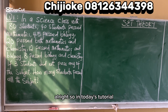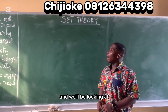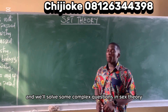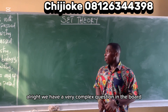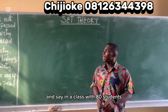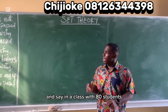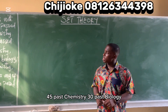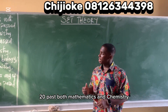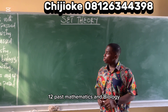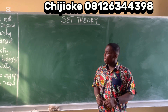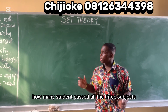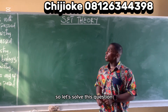In today's tutorial, we're talking about set theory, and we'll be looking at representation of sets using Venn diagrams and solving some complex questions. We have a complex question on the board: in a class with 80 students, 40 passed mathematics, 45 passed chemistry, 30 passed biology, 20 passed both mathematics and chemistry, 12 passed mathematics and biology, 8 passed biology and chemistry, and 3 students did not pass any of the subjects. How many students passed all 3 subjects?